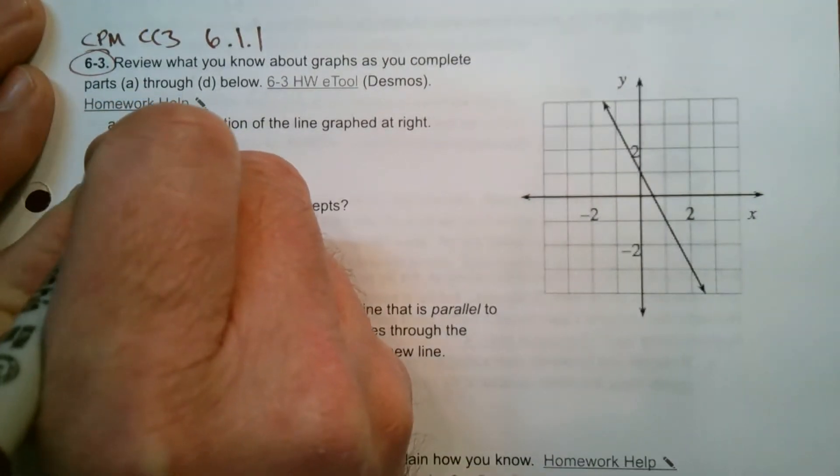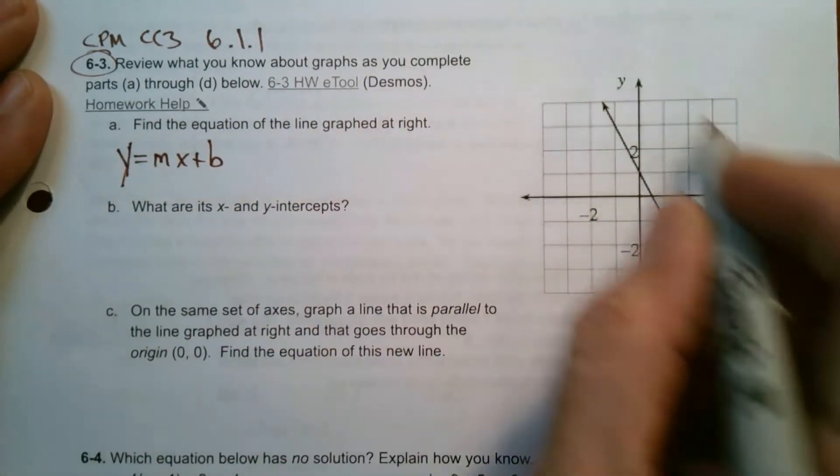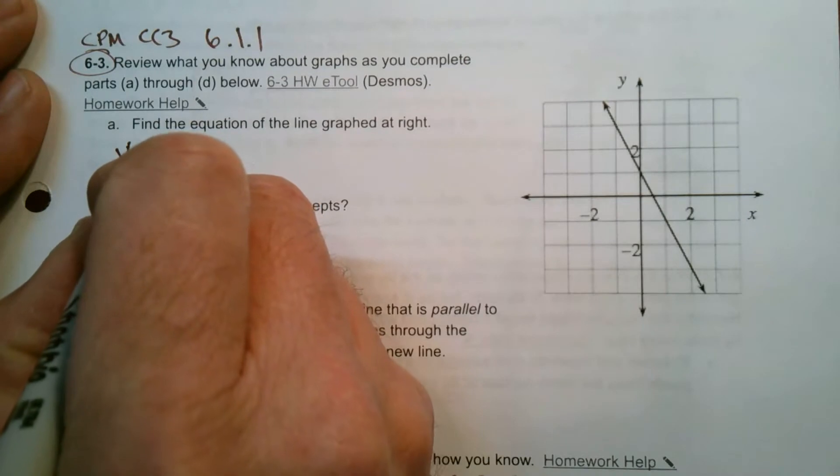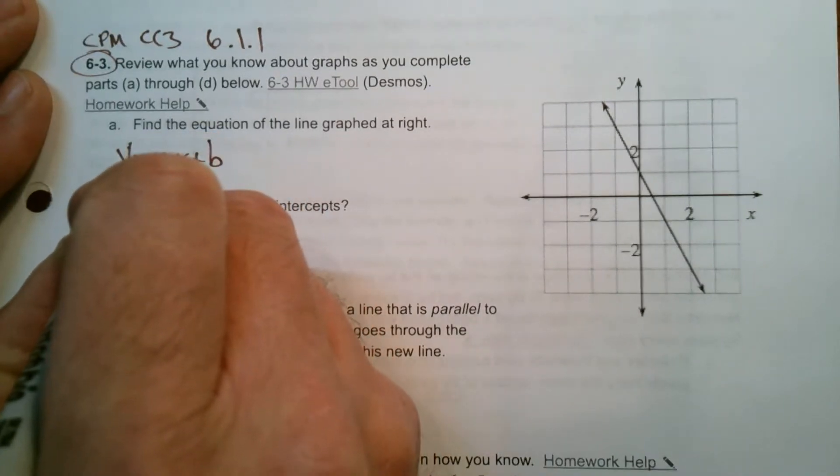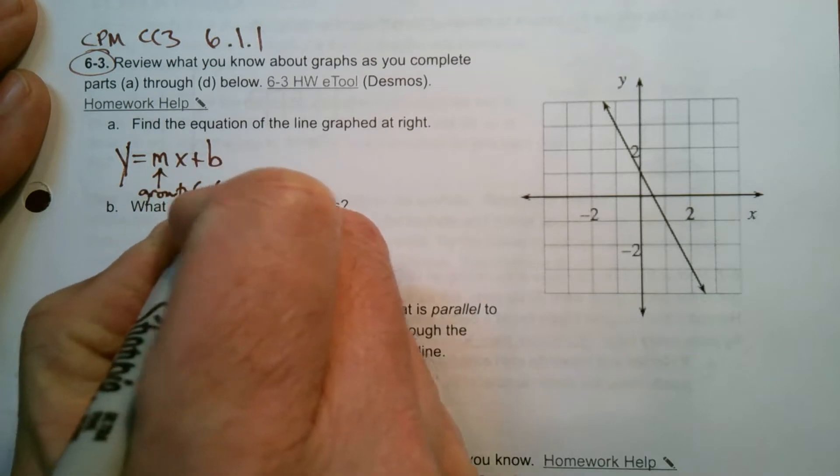That's our form of a line that we're going to be able to utilize quite a bit, because the m always represents the growth or the slope of the line, right?